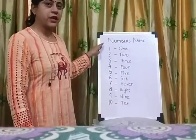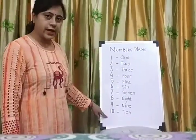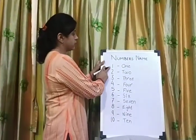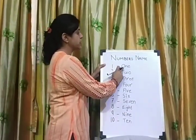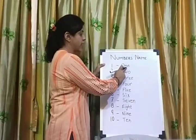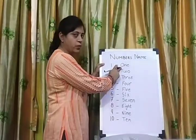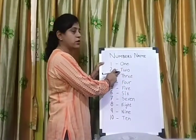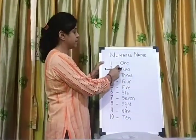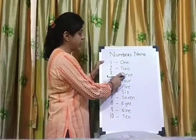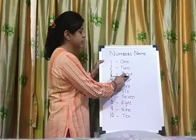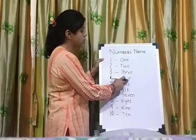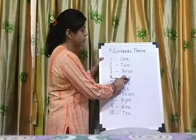These are the numbers name from one to ten. Now you will repeat it with me. What is this? One. The spelling of one is O-N-E. One. T-W-O. Two. T-H-R-E-E. Three. F-O-U-R. Four.